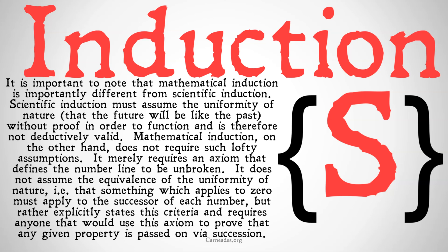Mathematical induction, on the other hand, does not require such lofty assumptions. It merely requires an axiom that defines the number line to be unbroken. It doesn't assume the uniformity of nature in math — rather, it explicitly states that as a criteria, and requires anyone using this axiom to prove not only that the principle applies to the first natural number, but also that applying to one natural number means it must apply to the successor. So scientific induction has many problems — the problem of induction, all these skeptical questions. Mathematical induction doesn't have those problems, because for it to work, you explicitly have to prove the very principle that's in question for scientific induction — the one you can't really prove without circularity. Whereas for mathematical induction, you have to prove that if it applies to one number, it must apply to its successor as well.